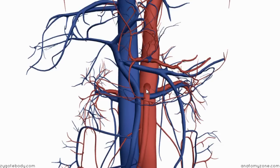One thing to point out is that the inferior part of the duodenum — the duodenum has this C shape — and the inferior part of the duodenum actually passes underneath the superior mesenteric artery.